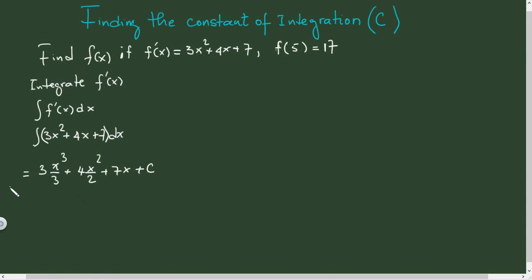Simplifying, the 3s cancel out, and we get x³ + 2x² + 7x + C.